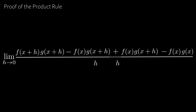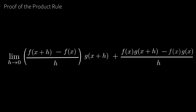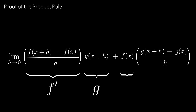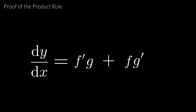Splitting the fraction into two parts and factorizing g(x+h) on the left and f(x) on the right, we examine each limit. The first term yields the definition of the derivative of f(x) multiplied by g(x+h), whose limit as h→0 is g(x). The second term yields f(x) times the derivative of g(x), giving us the famous product rule: (fg)' = f'g + fg'.